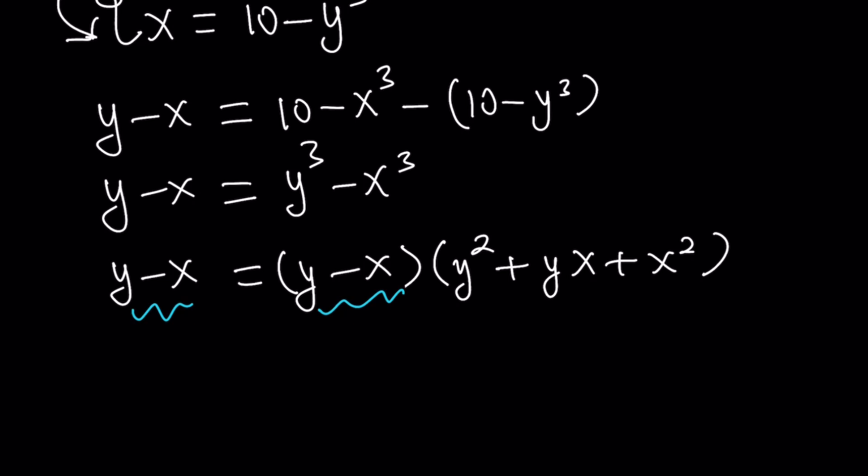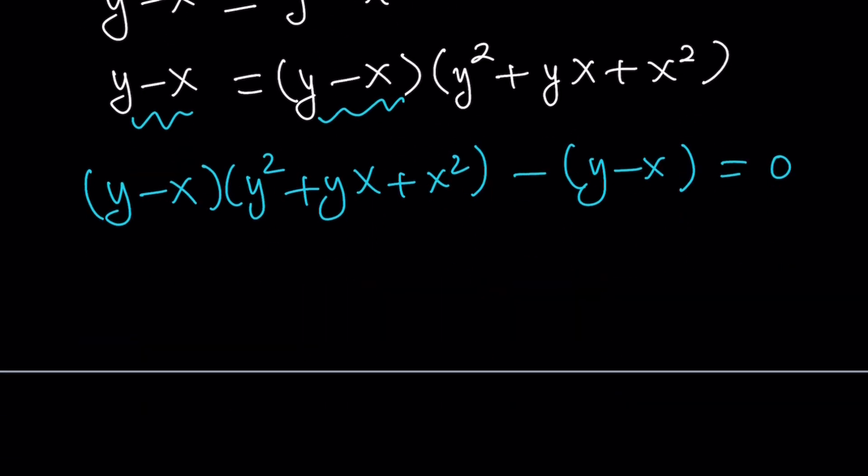So what should we do instead? Let's put everything on the same side. Y minus x times y squared plus yx plus x squared minus y minus x equals 0. And then you can just go ahead and put a little 1 here so that there's a common factor. And it is going to be y minus x. Let's take out y minus x. We get y squared plus yx plus x squared minus 1 equals 0.